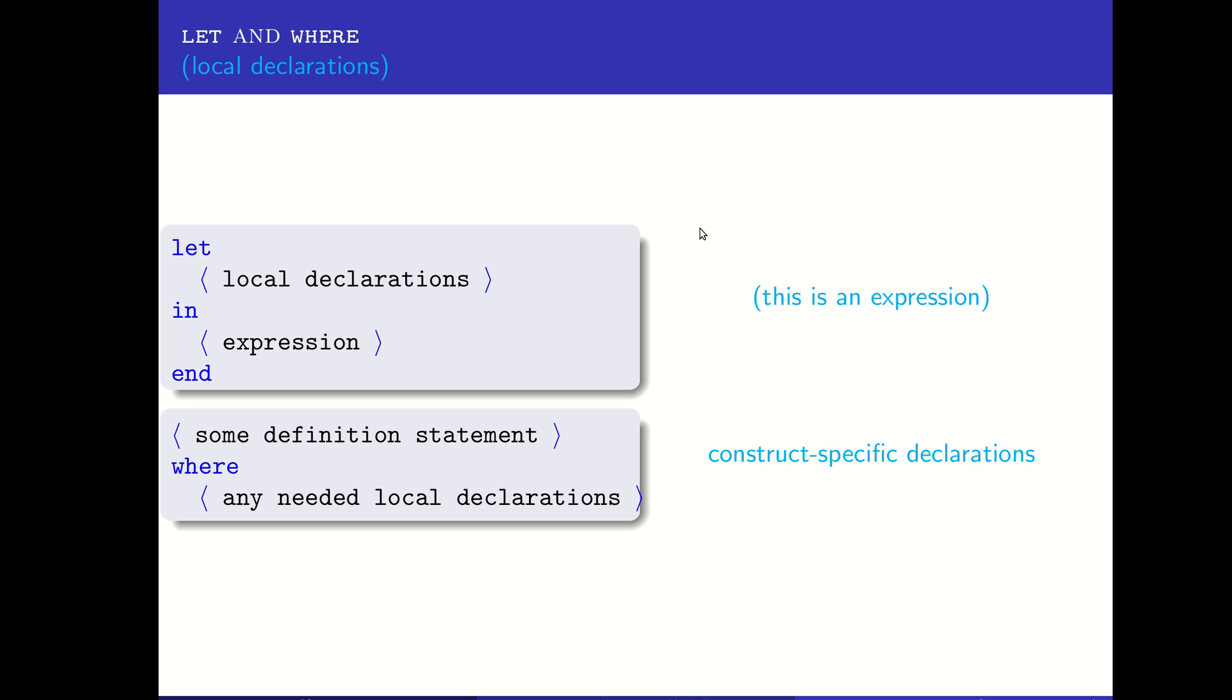The two main ways to define local things are let and where. On the surface, it looks like the main difference is that a let statement declares things first and then uses them in an expression, whereas a where statement comes after some definition statement that uses it, like a function definition or variable definition. Then where allows you to say that was supposed to be seven or that kind of thing. So on the surface, the ordering is the main difference.